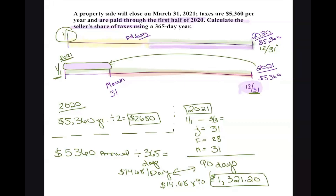Now we add both portions: 2020 amount is $2,680, and 2021 amount is $1,321.20. $2,680 + $1,321.20 = $4,001.20. That is the seller's total share of taxes. I really like all these pictures and colors — it helps so much. Joy is good; there's not enough of it in the world.